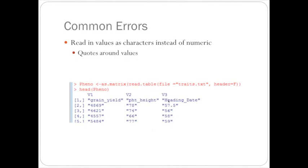If there's quotes around the values, then it's a character matrix instead of numeric. But you need a numeric matrix in order to run mix.solve. And so to do that, to fix this, you would just set the header equal to true. And then the first line would be a number, and it would read in as a numeric matrix.